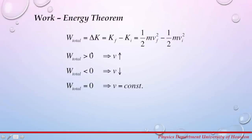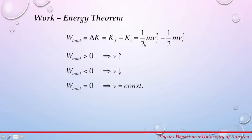Now that we've derived the work-energy theorem, let's talk about the sign of work. The total work done on the system equals the change in kinetic energy. Work will be positive if the velocity of the system is increasing, and negative if velocity is decreasing. If velocity is constant, v_f equals v_i, so the change in kinetic energy is zero.